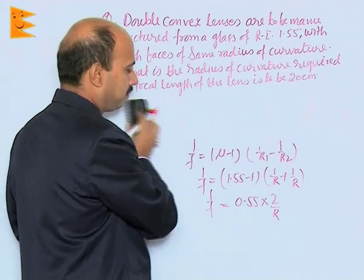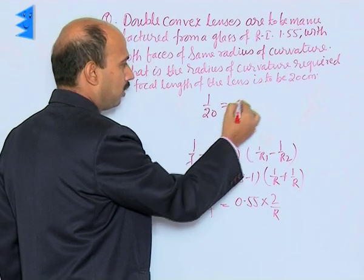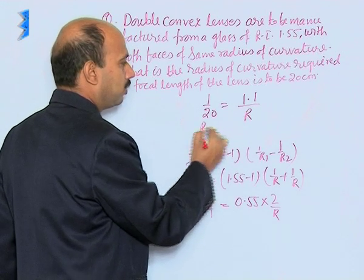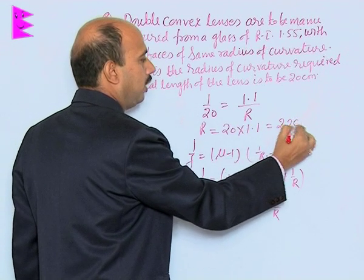So we can write 1/20 equals 1.1 divided by R. So R equals 20 times 1.1, which is 22 centimeters.